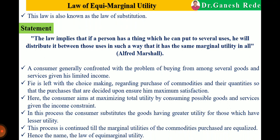The consumer aims at maximizing total utility by consuming possible goods and services within a given income constraint. In this process, the consumer substitutes goods having greater utility for those with lesser utility — choosing the goods which have higher utility. This process continues till the marginal utilities of all commodities purchased are equalized. Hence, the name 'law of equimarginal utility' is given.